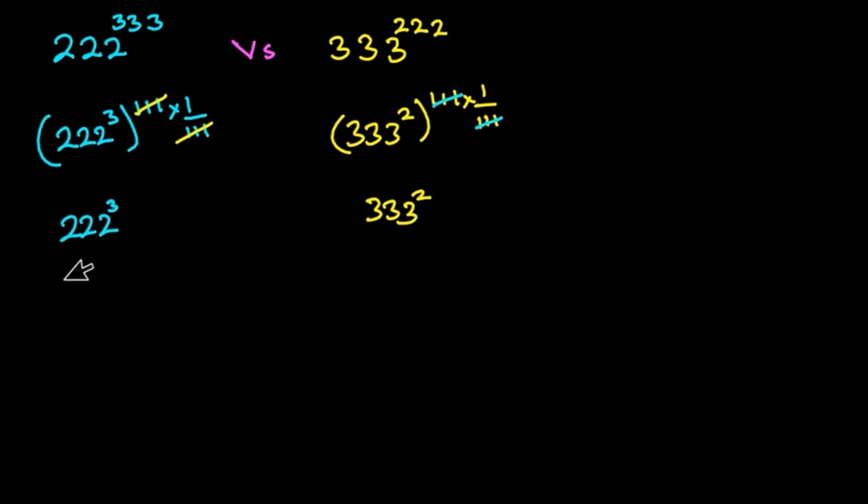This could also be written as 2 times 111 to the power 3. But don't forget that when you have a times b to the power m, this is the same as a to the power m times b to the power m. So I'm going to use the same idea here.